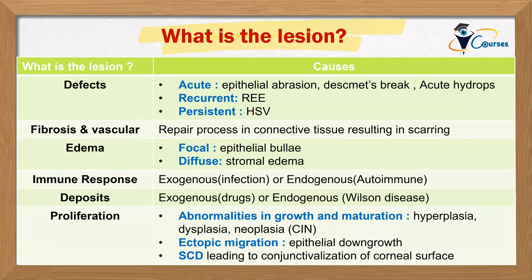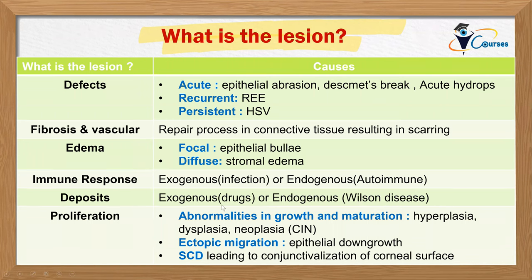The lesion in cornea caused by autoimmune processes tends to be peripheral, close to the blood vessels at the limbus where autoantibodies originate. Knowing the underlying immune response also tells you how to treat the patient. The lesion can also be deposits — exogenous deposits from outside, like amiodarone causing cornea verticillata or vortex keratopathy, or endogenous like copper deposited in Wilson's disease.